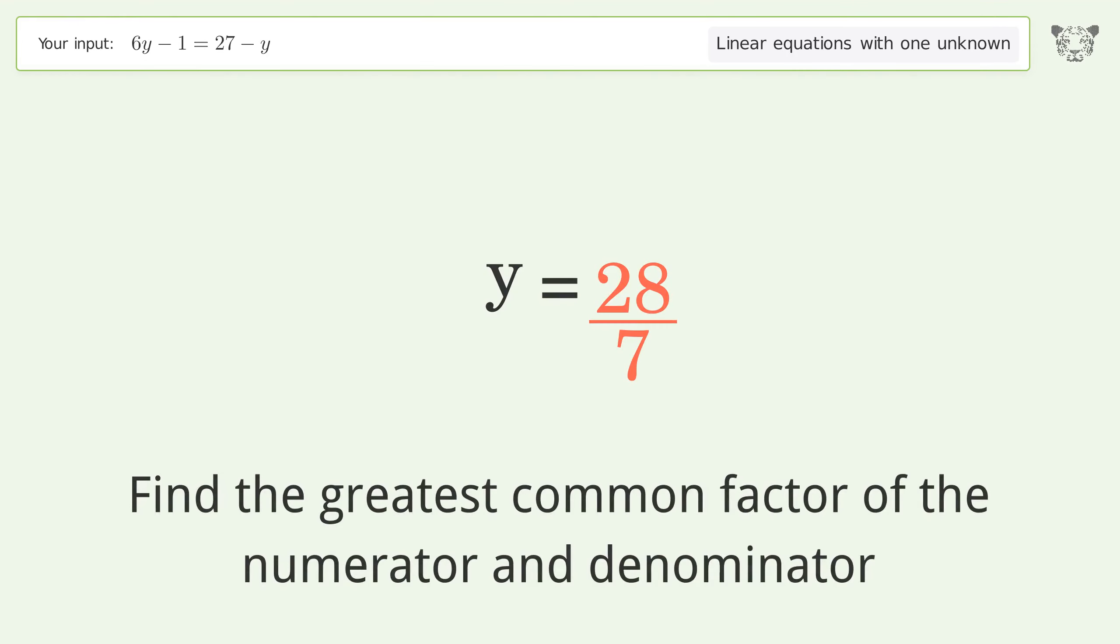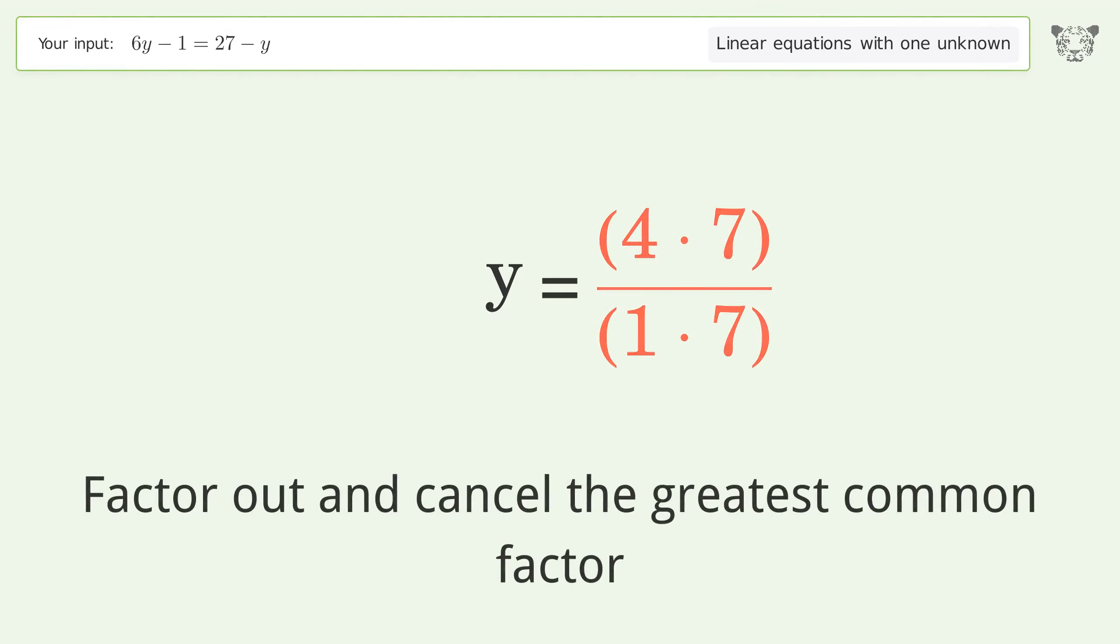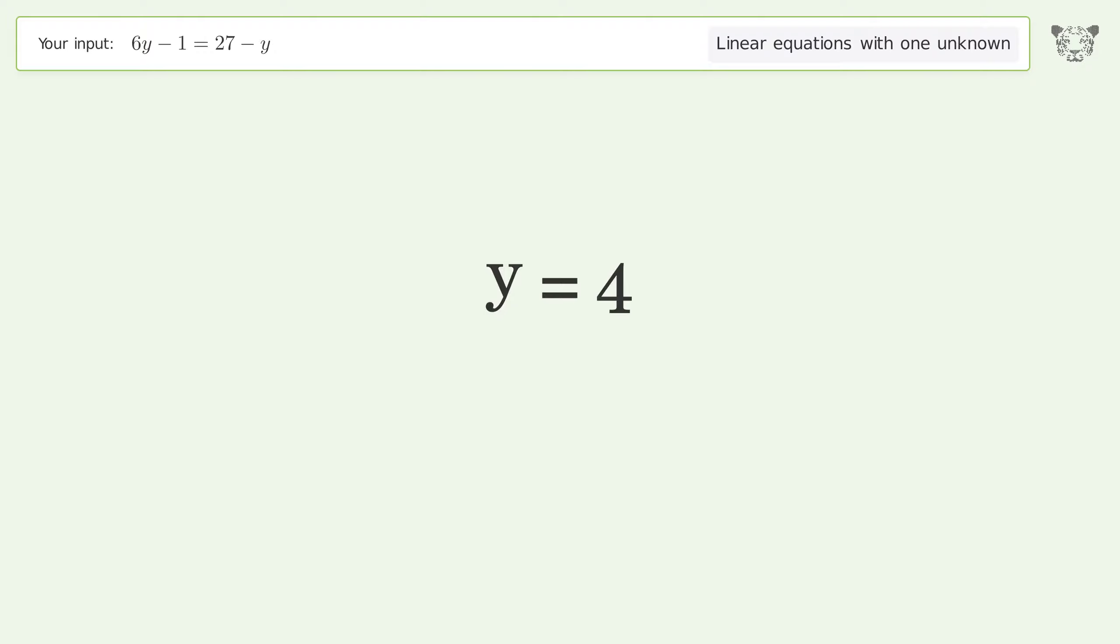Find the greatest common factor of the numerator and denominator. Factor out and cancel the greatest common factor. And so the final result is y equals 4.